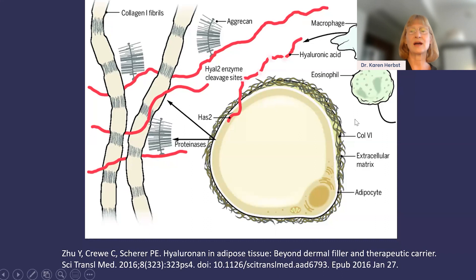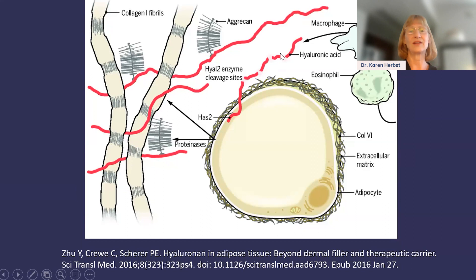Within the extracellular matrix are immune cells like macrophages, eosinophils, and mast cells, but also fibroblasts which stimulate inflammation. One of the most important parts of the extracellular matrix is hyaluronic acid or hyaluronan, shown in red. Hyaluronan interacts directly with the adipocyte, immune cells, and other extracellular matrix parts. It binds other proteins to which other glycosaminoglycans bind. Hyaluronic acid is a glycosaminoglycan — a sugar molecule — and along with other negatively charged glycosaminoglycans, both bind up water and salt.